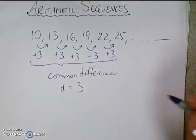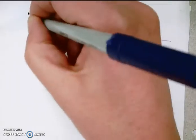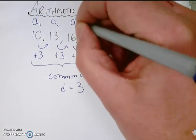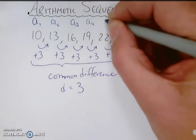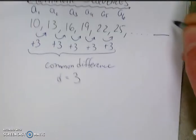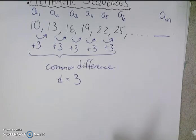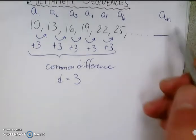So first things first, let's label this a couple things. This is the first term, so we'll call that a1. Second term we'll call a2, then a3, a4, a5, a6. And the one down here that we don't know is an. And n could be the 100th term, the 50th term, the 29th term.